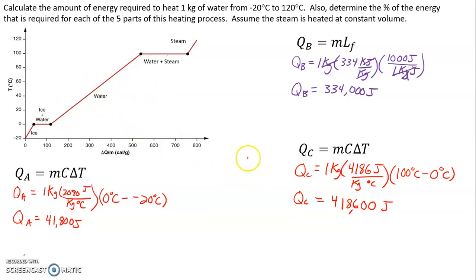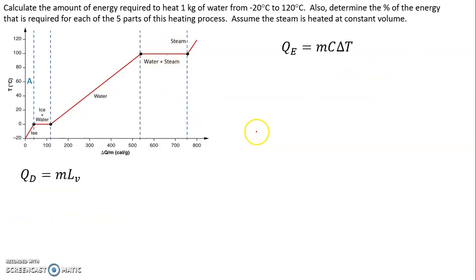Now we're going to move on to region D. So this part where we have the water changing from liquid to gas. During that part that's a phase change, so we're going to need the latent heat of vaporization. Vaporization is for the liquid to gas or gas to liquid phase transition. So we're going to need to look up that value.